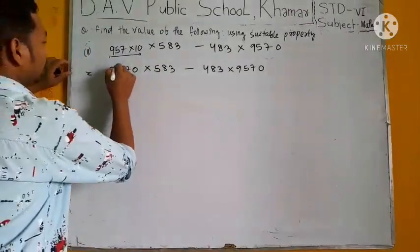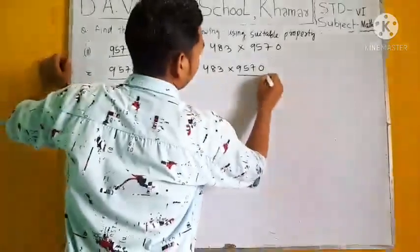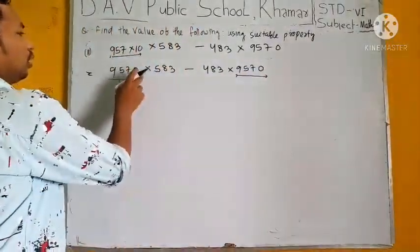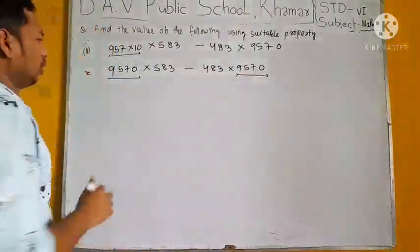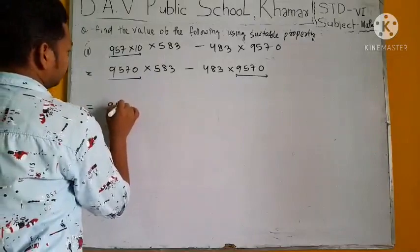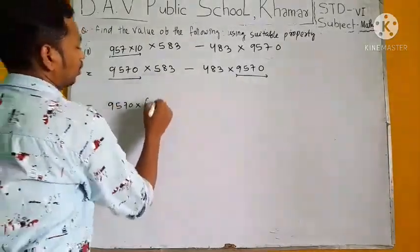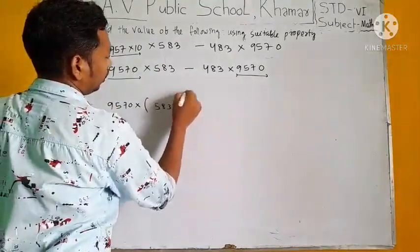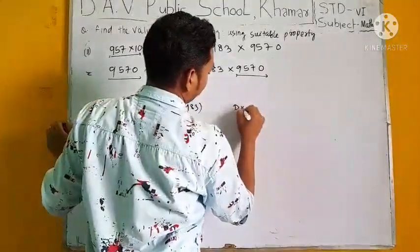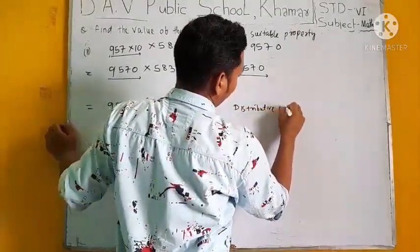Now look at here, 9570 is common in both. Now we take common. 9570 into 583 minus 483. You see the distributive property.